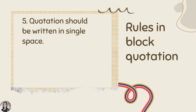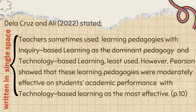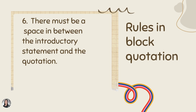Rule number 5: the quotation should be written in single space. Rule number 6: there must be a space in between the introductory statement and the quotation.